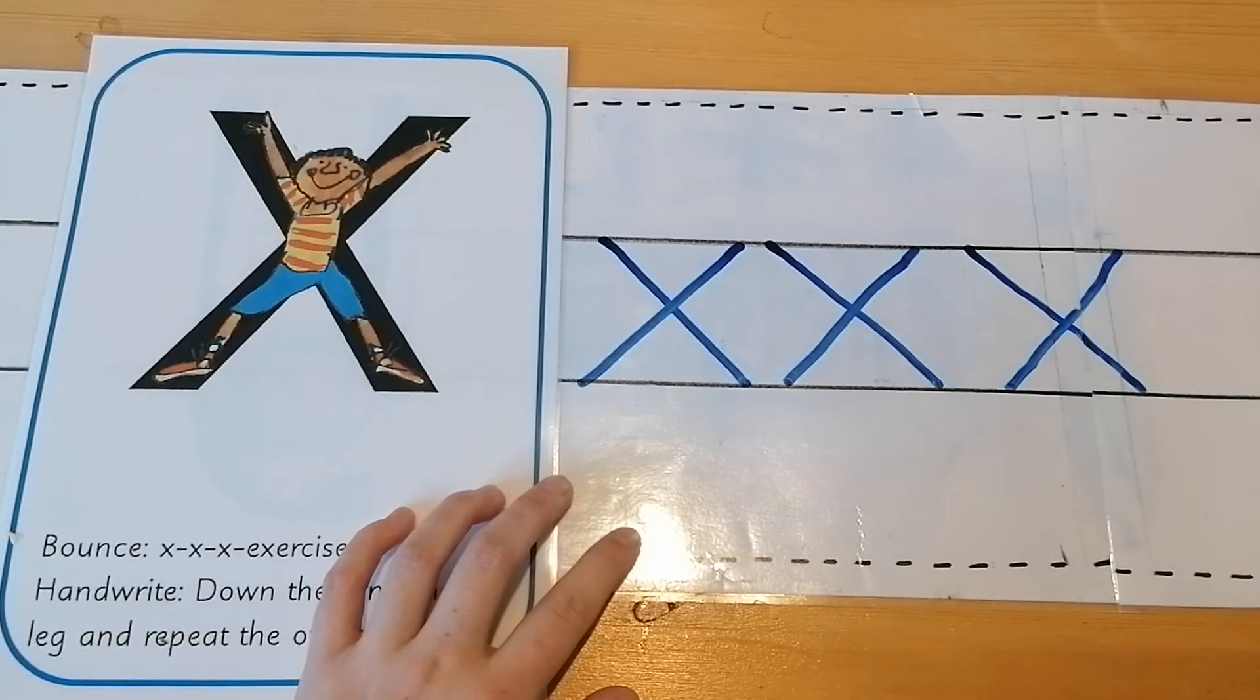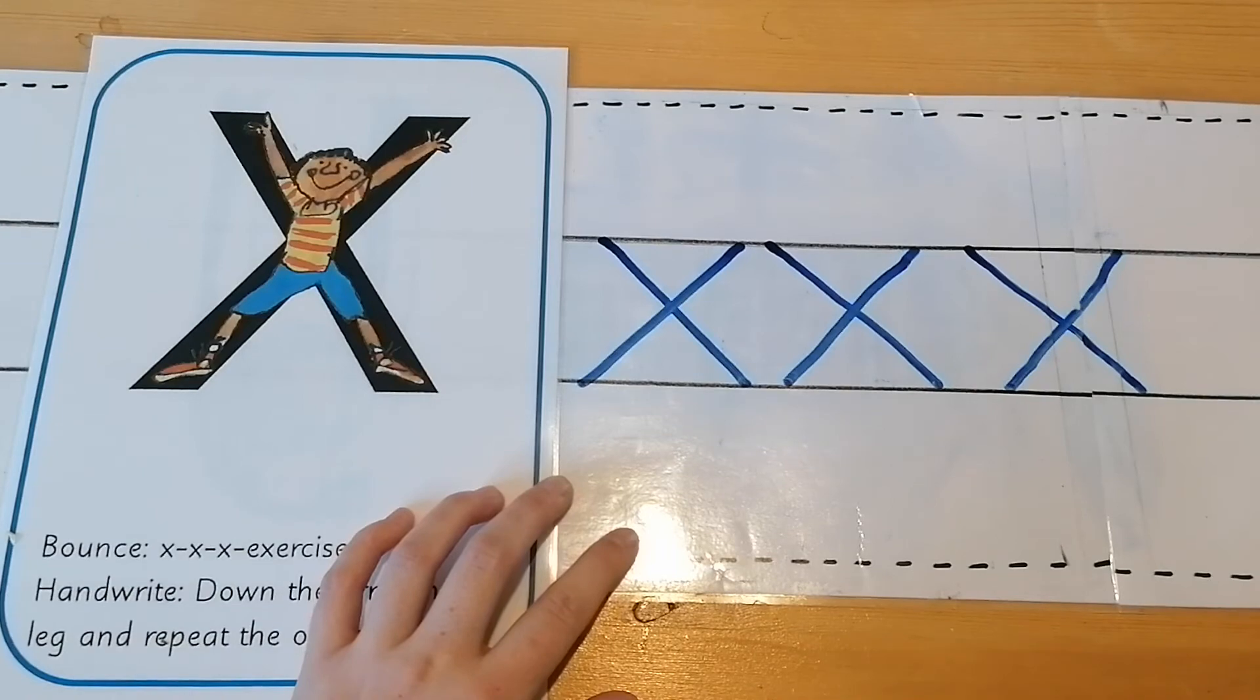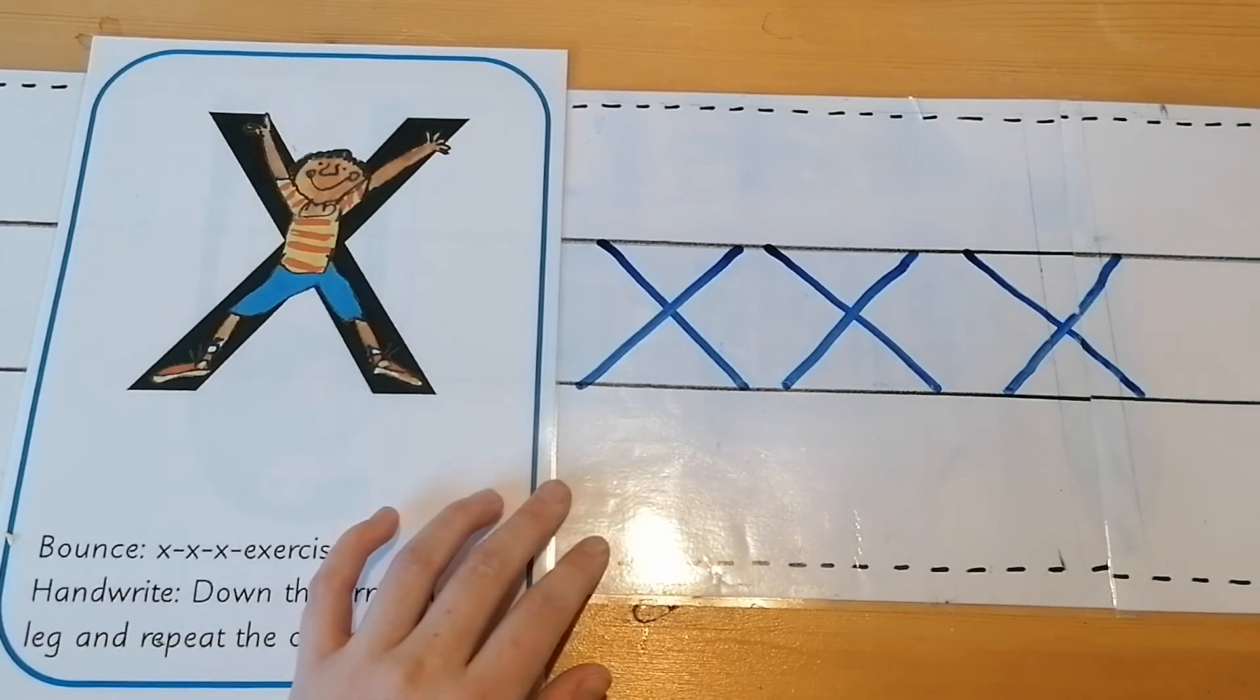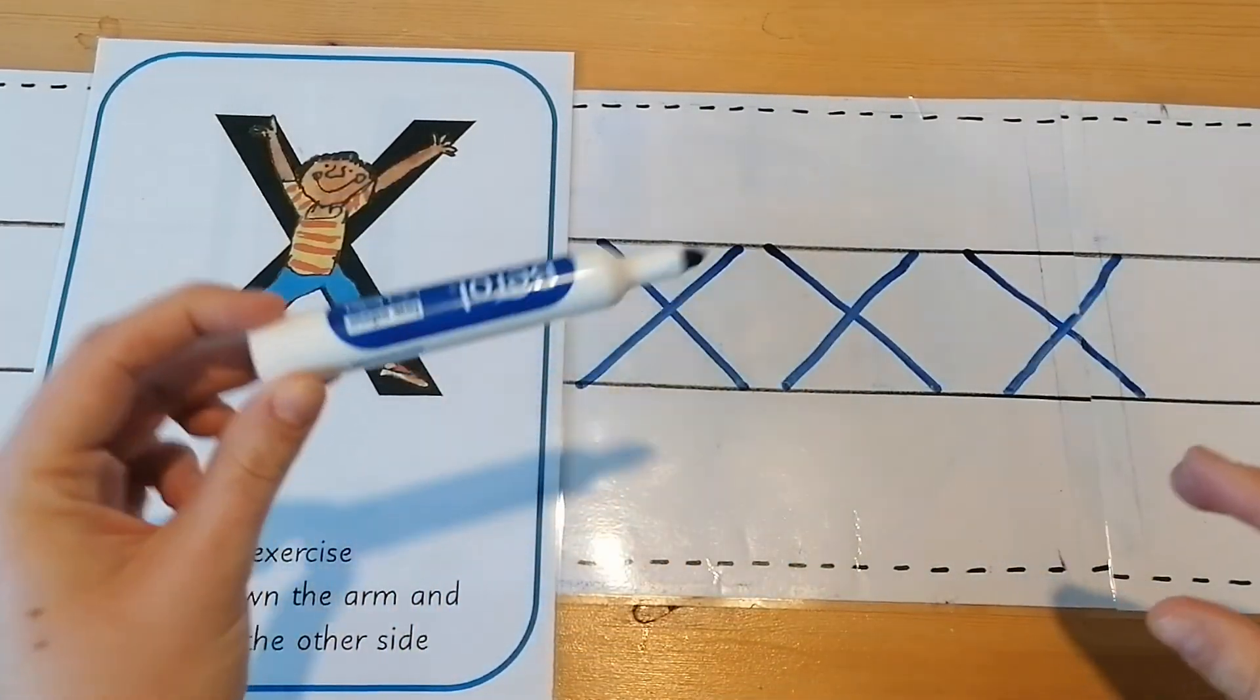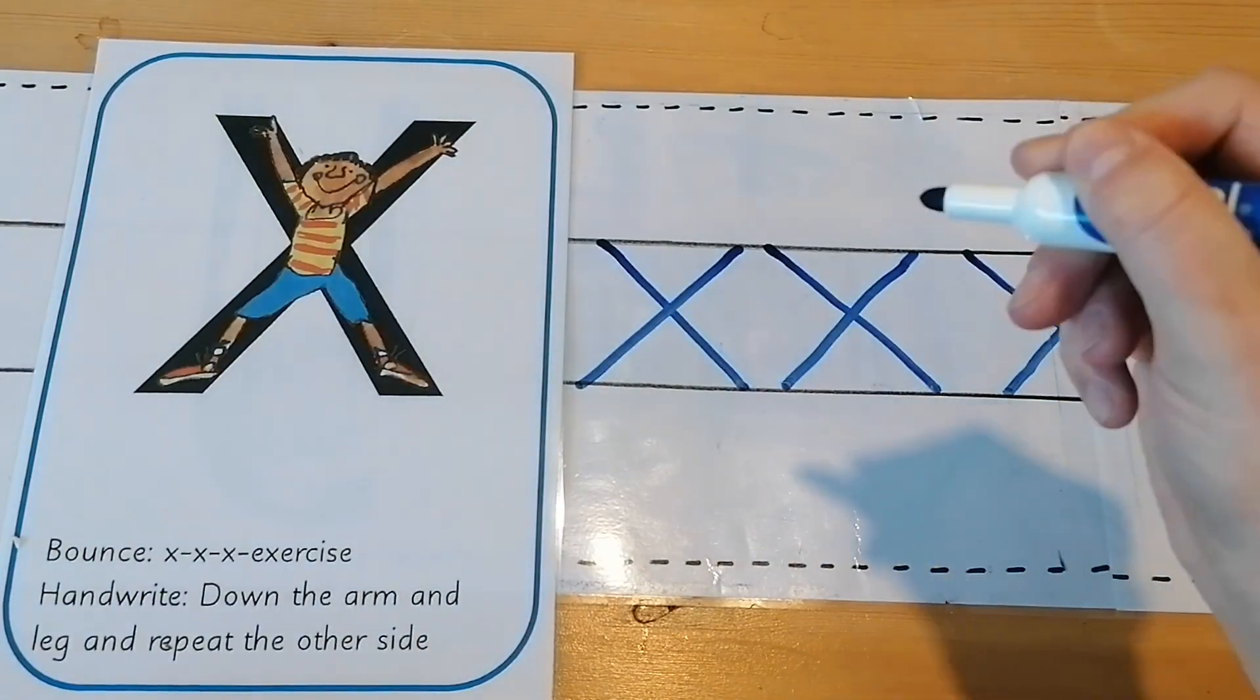Okay boys and girls, it's now time for you to go and practice your X. Remember you need to sit properly in your chair, bottom back in chair, tummy towards table. Hold your pencil properly, remember the rhyme, snap it, flip it, grip it.